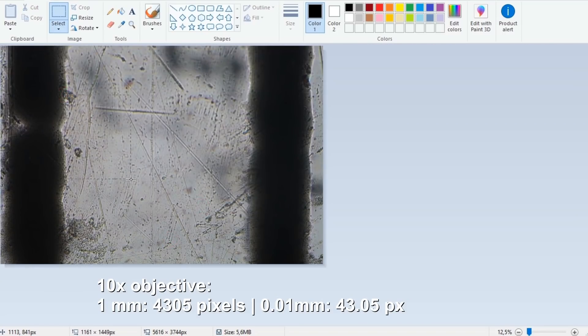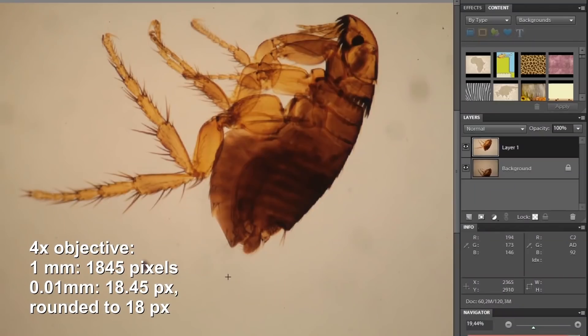And this here is the ruler. Okay, so you see two lines of the ruler. You can see that they're quite large. And here again, I'm selecting it. And here in this case, it's 4305 pixels for one millimeter. I'm using again the 10x objective here.